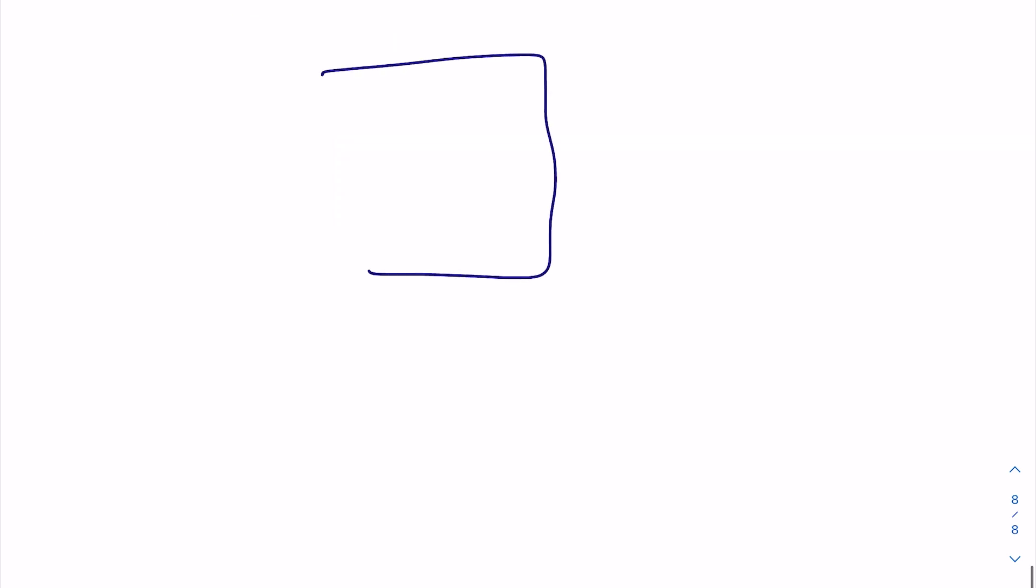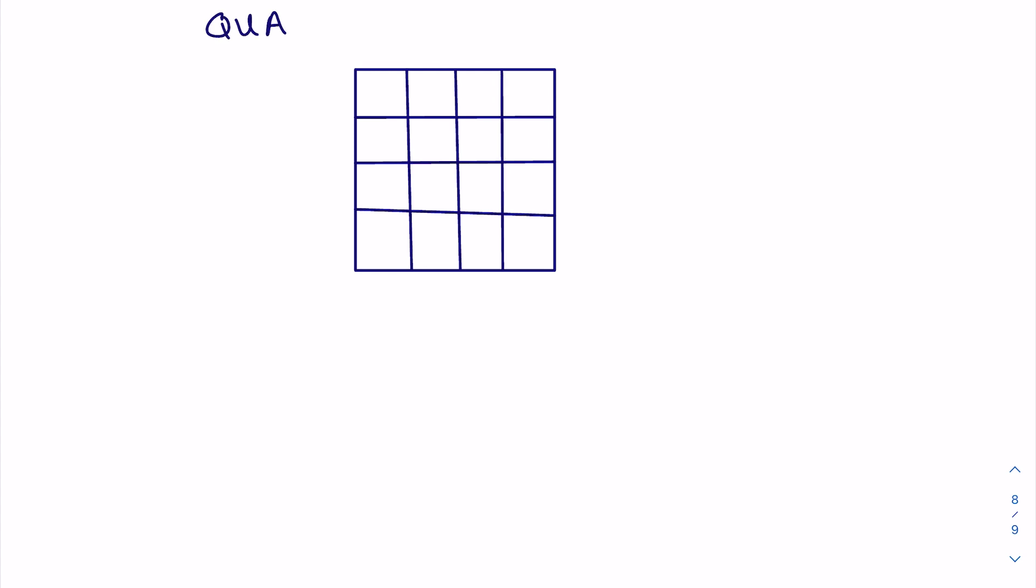Once I've seen them ask you to draw a quadrat, so that's just a metal frame used to sample the population of species. So something like this will be more than adequate. The main thing is to make sure that you spell it correctly. It's a quadrat, not a quadrant.